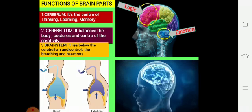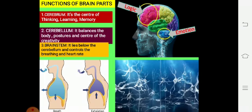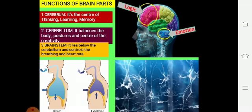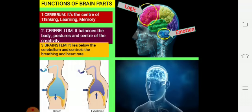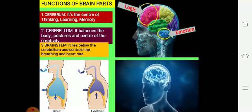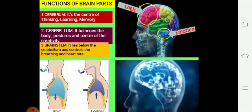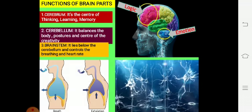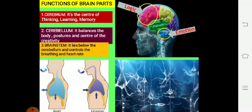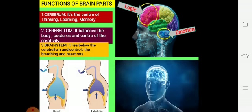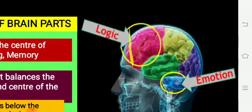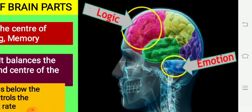Now we will discuss the functions of the brain parts. First, the cerebrum — the largest part of our brain. The cerebrum is the center of thinking, learning, and memory. It collects information from all sense organs and controls thinking. The cerebrum is the logical part of our brain.